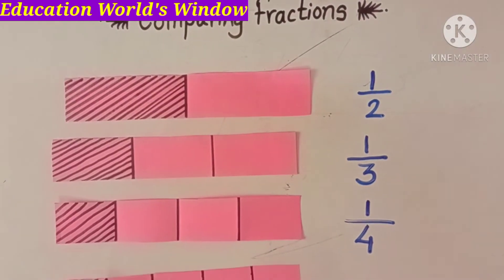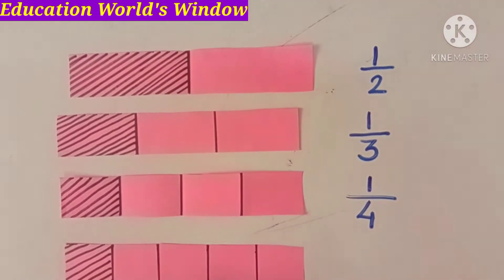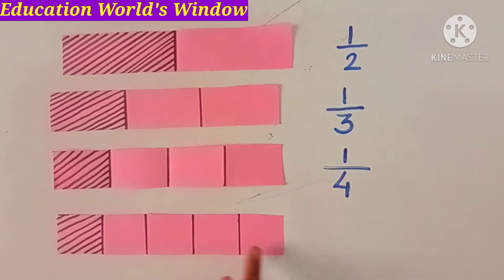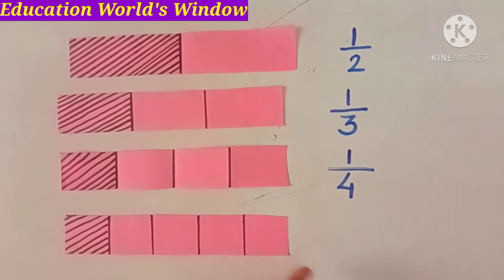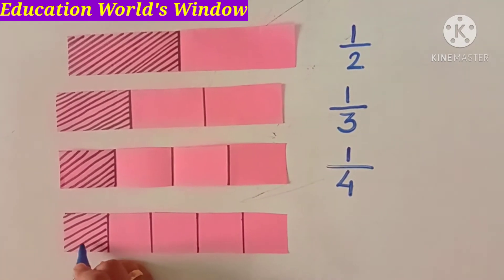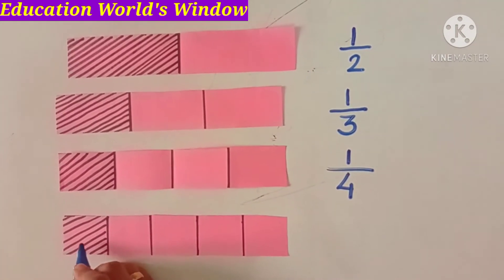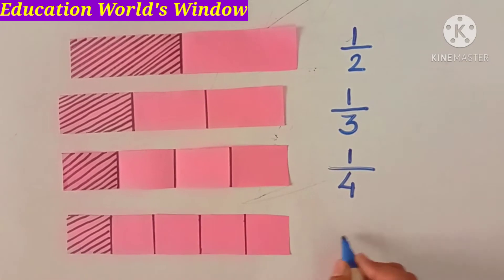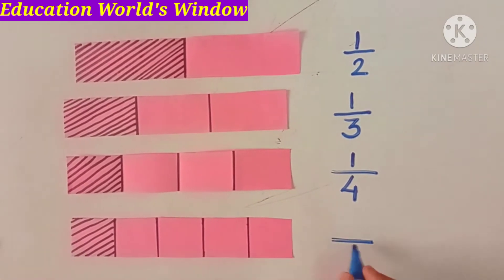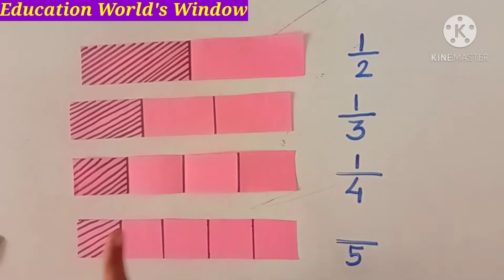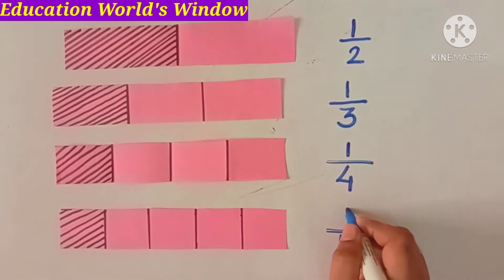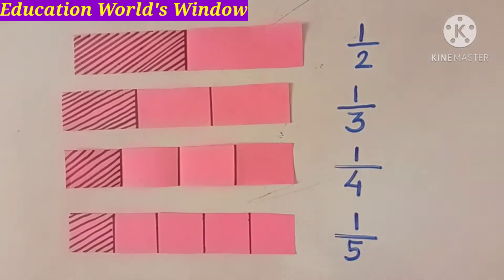This strip is divided into 5 parts, and the colored part is 1. So the total parts are 5 and the colored part is 1, giving us the fraction 1 upon 5.